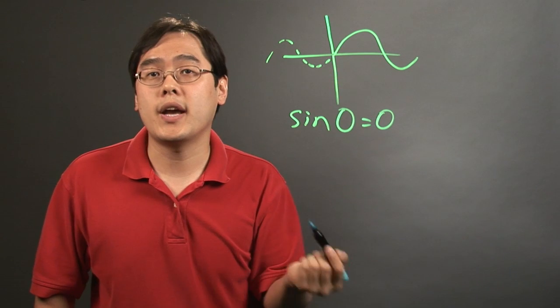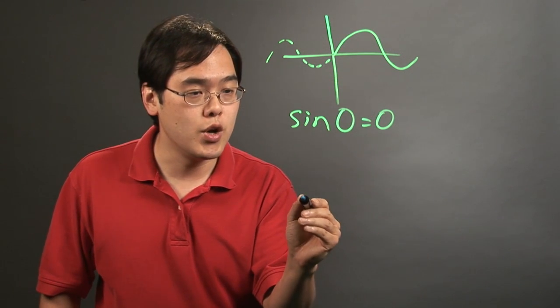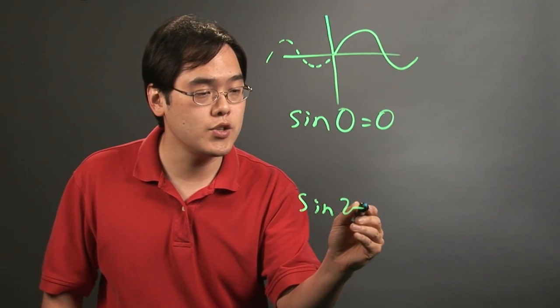Because sine has a period of 2π, you know that sine of 2π is also zero.